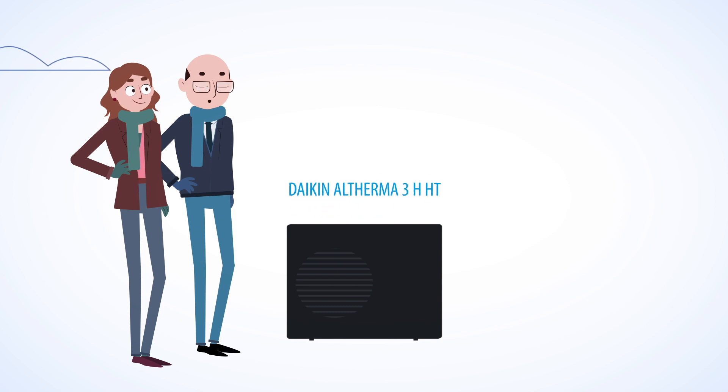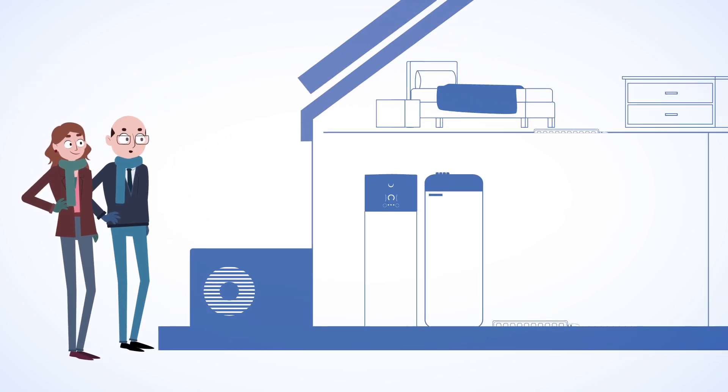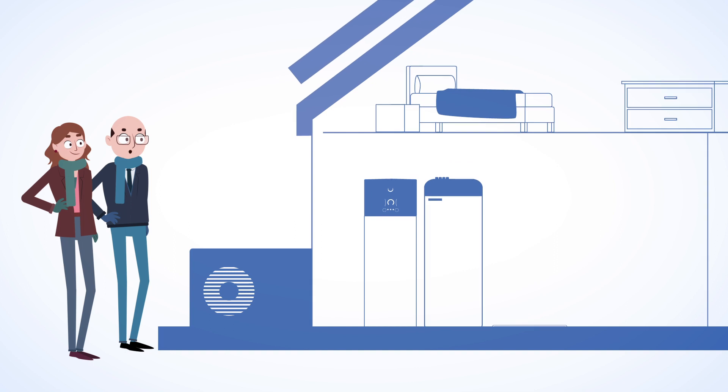This is the Daikin Altherma 3HHT. It's a perfect renewable alternative for a combustion boiler. All radiators in the home can be kept. It can operate at an ambient temperature down to minus 28 degrees Celsius.